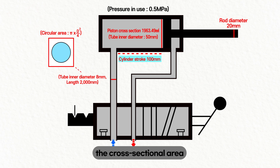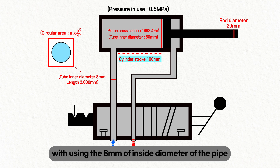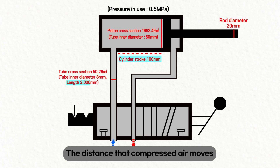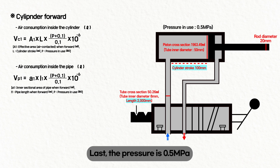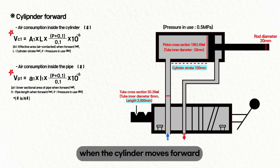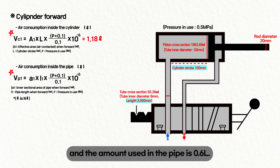Looking at the connected pipe, the cross-sectional area is also circular, so we use the circle area formula with the 8 mm inside diameter of the pipe. The distance compressed air moves equals the length of the pipe: 2 meters. The pressure is 0.5 megapascals. Putting all figures into the formula, the amount of air used when the cylinder moves forward is approximately 1.18 liters, and the amount used in the pipe is 0.6 liters.